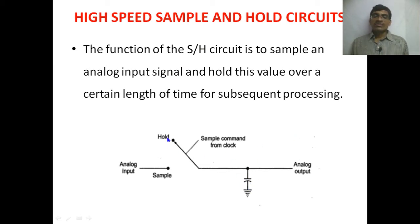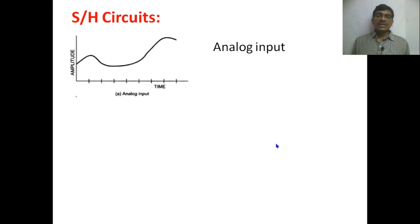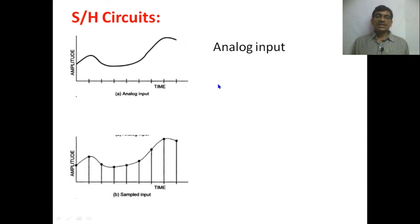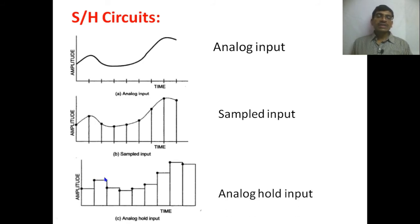Sampling means storing the analog input voltage in the capacitor, and then the held analog output voltage is available when the switch is open. Looking at the analog input signal and its sampling: the sampled output is taken at certain time intervals, capturing the analog input voltage. The analog hold output looks like a staircase because the capacitor is charged to each captured input voltage value.